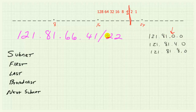All the action is happening in the third octet. The prefix is slash 22, so somewhere between the 17th and 24th bit is where the dividing line falls, which means the third octet is what we call the interesting octet — that's where the dividing line falls. We could keep counting: 121.81.0.0, 121.81.4.0, 121.81.8.0 — but that's a long way before we get anywhere close to the subnet containing a .66 in the third octet. So what do we do to get there quicker?